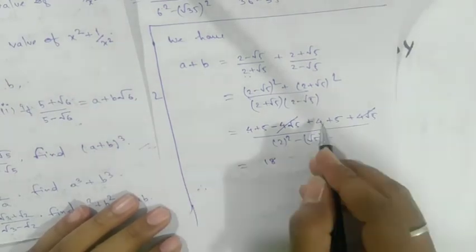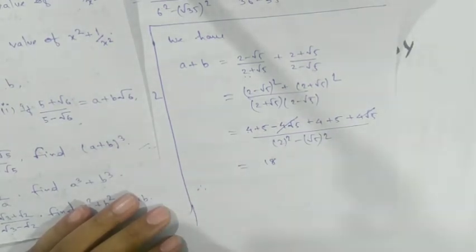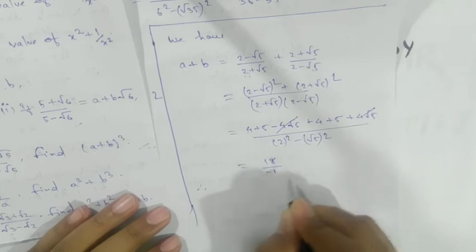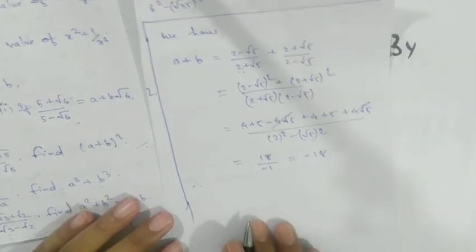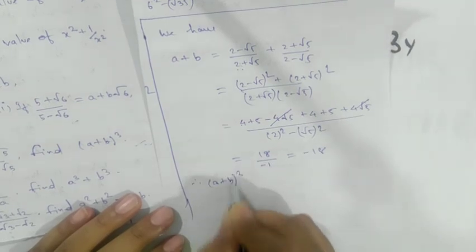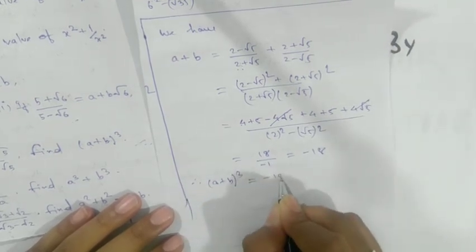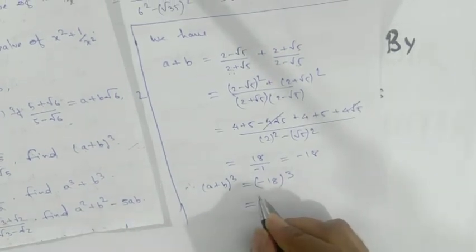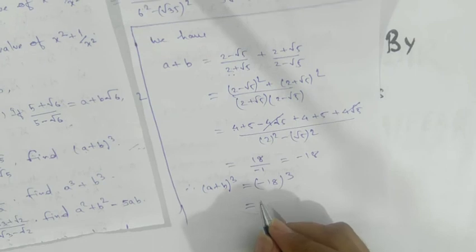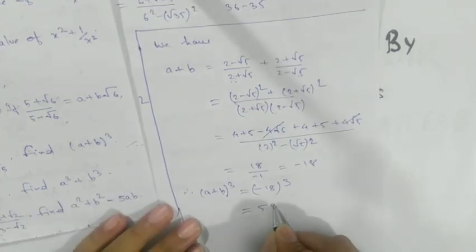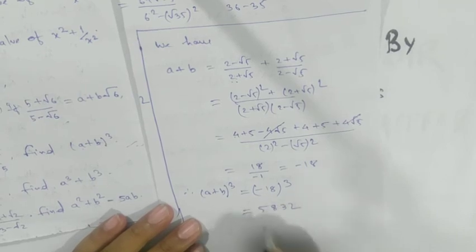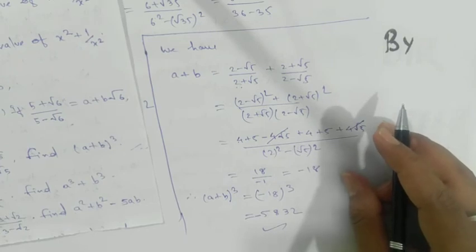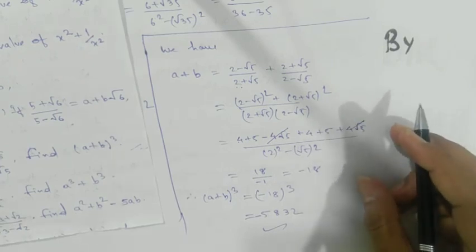So the simplified value is 18 / (-1) = -18. Therefore (a+b)³ evaluated here gives (-18) and the cube is -5832. This is your final answer. I hope you understood — thank you very much.